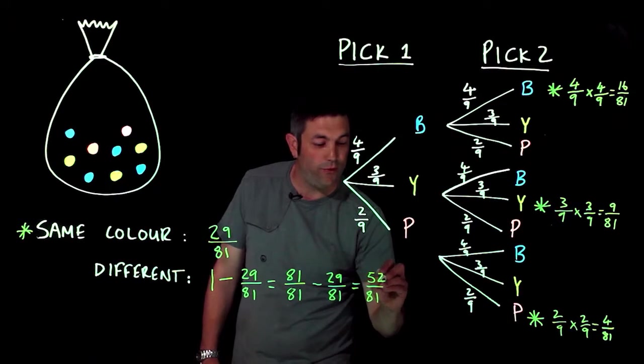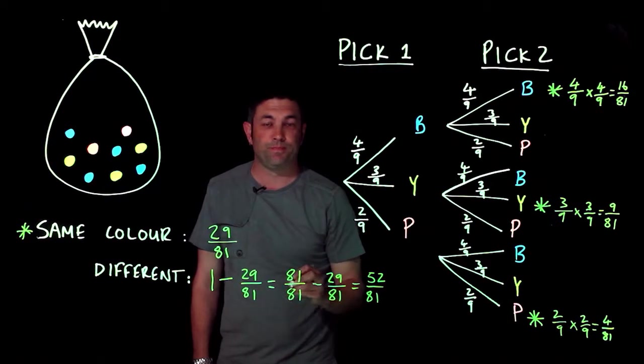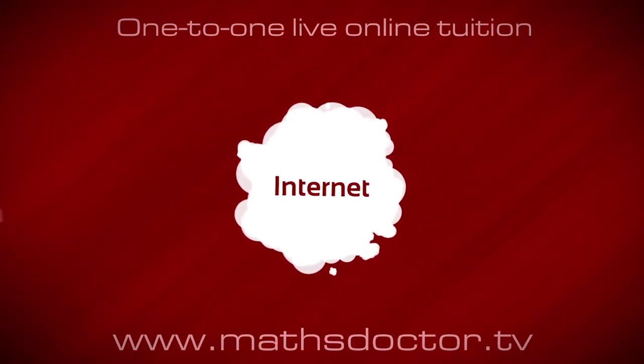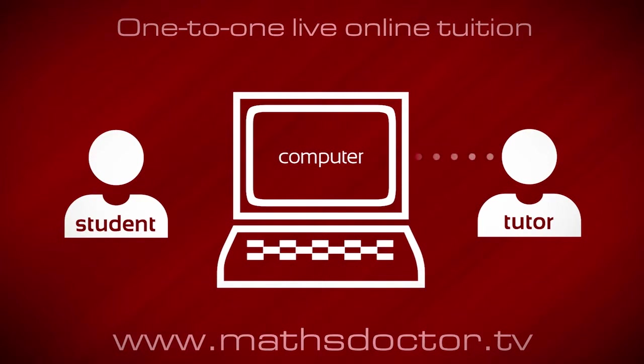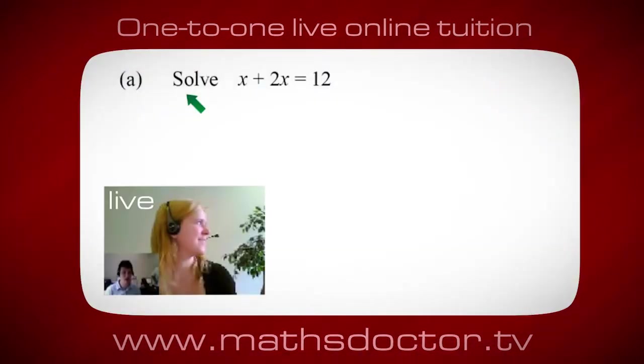Okay, so let's look at this one. So solve x plus 2x equals 12. So what do you think you do first?